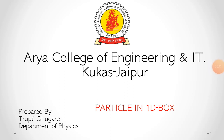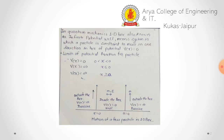Today we are going to discuss the topic particle in 1D box. In quantum mechanics, a 1D box, also known as an infinite potential well, is a system in which a particle is constrained to move in one direction in a box where the potential V(x) is equal to 0.